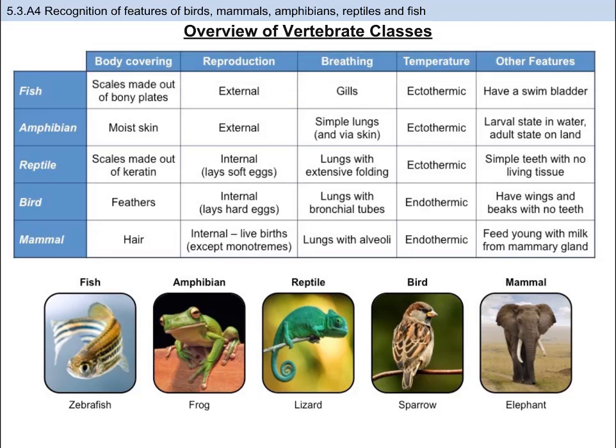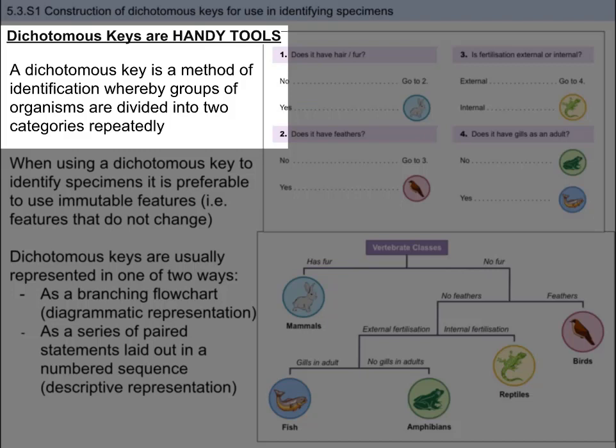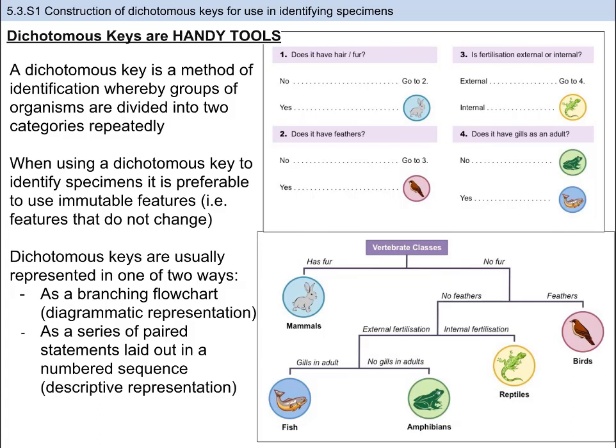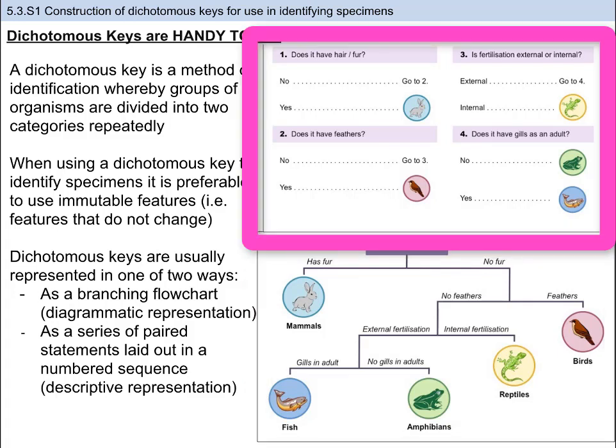Pause the video here and make sure you have these down. Lastly, there's one skill you need to be able to do, which is construct a dichotomous key. A dichotomous key is a method of identification whereby groups of organisms are divided into two categories repeatedly. With each sequential division, more information is revealed about the specific features of a particular organism. When using a dichotomous key to help identify specimens, it's important to use immutable features — features that don't change. Things like size, coloration, and behavioral patterns may vary among individuals; instead, physical structures like number of limbs and biological processes like reproduction methods make for better characteristics.